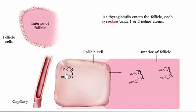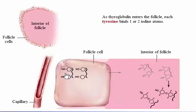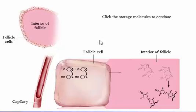As thyroglobulin enters the follicle, each tyrosine binds one or two iodine atoms. The iodinated forms of tyrosine couple, producing either a hormone with three iodine atoms (T3) or a hormone with four iodine atoms (T4), that is still a part of thyroglobulin. This molecule is stored until the follicle cells are stimulated to release thyroid hormone.